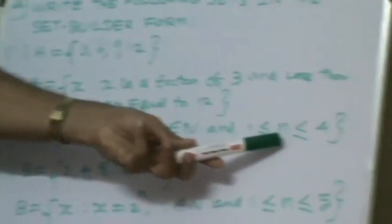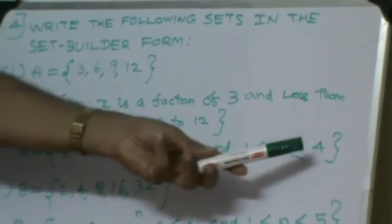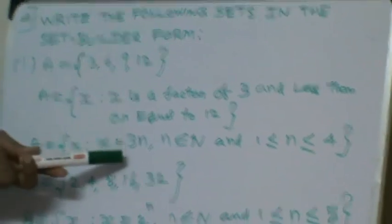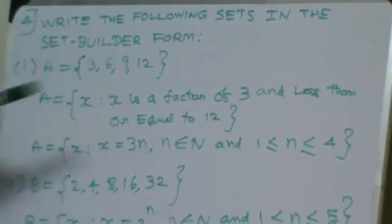What does it mean? 1 less than or equal to n is n is greater than or equal to 1. So n is equal to 1, 2, 3, 4 all the 4 digits. So 1 into 3 will be 3, 2 into 3 will be 6, 3 into 3 will be 9, 3 into 4 will be 12.